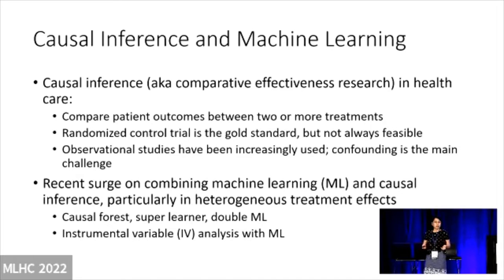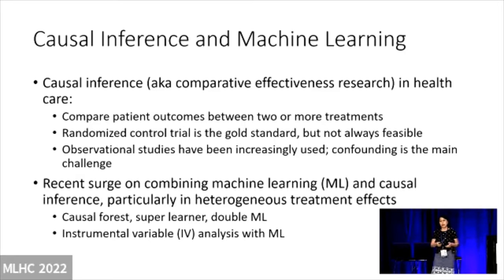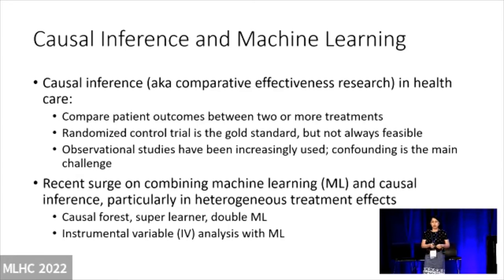In the 70s, Don Rubin did a series of fundamental work to introduce the potential outcomes framework. Then in the 80s, the propensity score was introduced. Also in the 80s and 90s, Jamie Robbins did a lot of wonderful work on longitudinal treatment. But only in the last 10 years have we seen a huge surge in causal inference in both academia and industry.